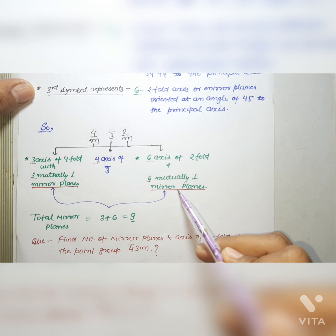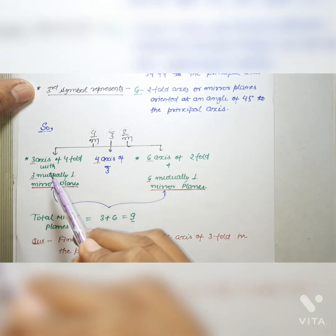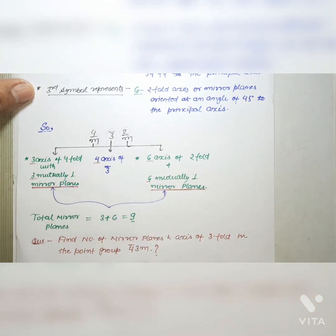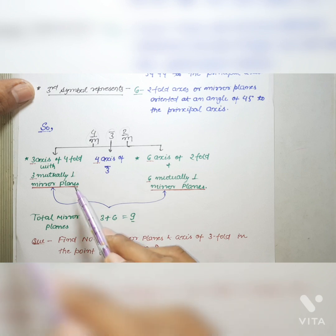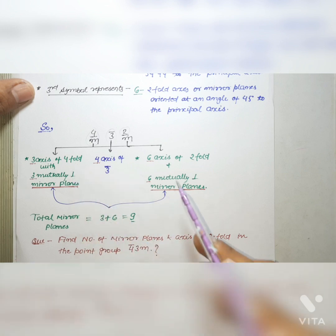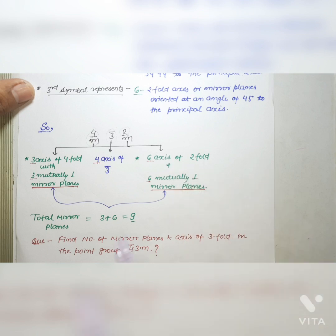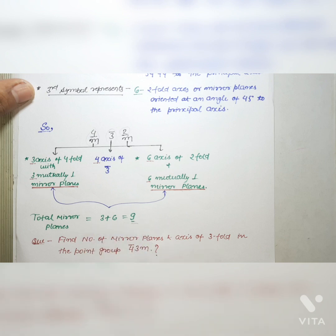In sum, there are three plus six, totaling nine mirror planes in the given point group: three mirror planes perpendicular to the three fourfold axes, and six mirror planes perpendicular to the six twofold axes. So the total number of mirror planes in the given point group is nine. The correct answer is nine.